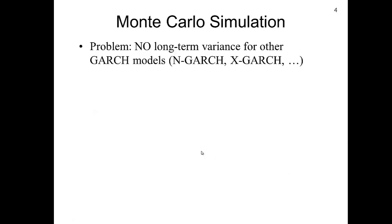The problem is that there's no long-term variance formula for other GARCH models such as N-GARCH or E-GARCH. Hence we need to use Monte Carlo simulation — that is, to generate random numbers.